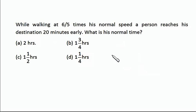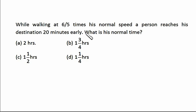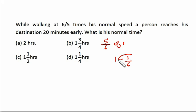Let's see the next case: while walking at six-fifths times his normal speed, a person reaches his destination 20 minutes early. What is his normal time? In the previous case the person was reducing his speed; here he is increasing it. Speed is inversely proportional to time, so if he makes his speed six-fifths of normal, he'll take five-sixths of the normal time. Assuming normal time is one unit, he'll be taking five-sixths of that.